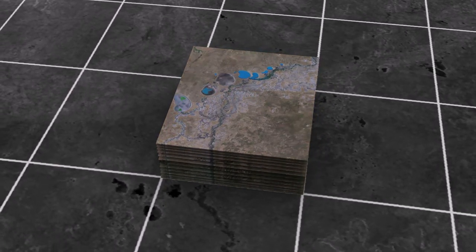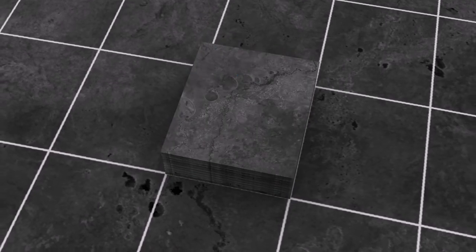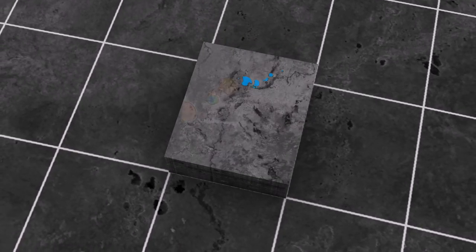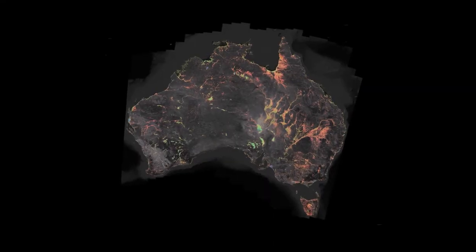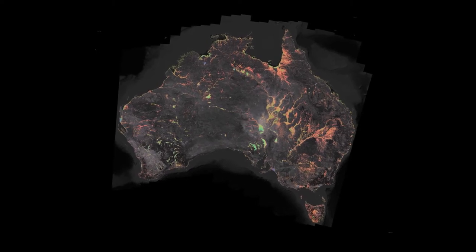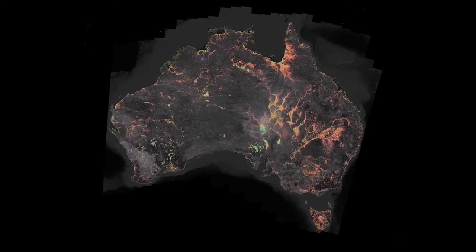The water data is then aggregated into a single map showing the frequency of inundation as shown in the water observations from SpaceMap. This product shows how often water was observed by the Landsat satellites over the entire length of the archive for the entire country.